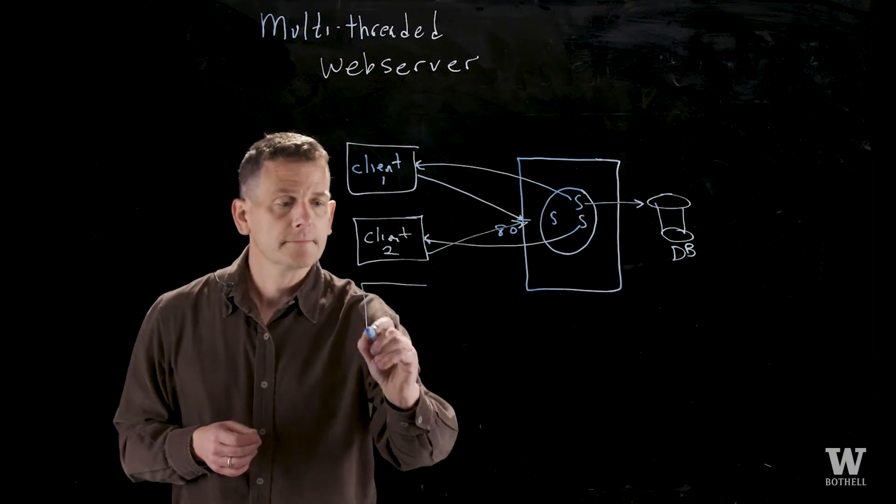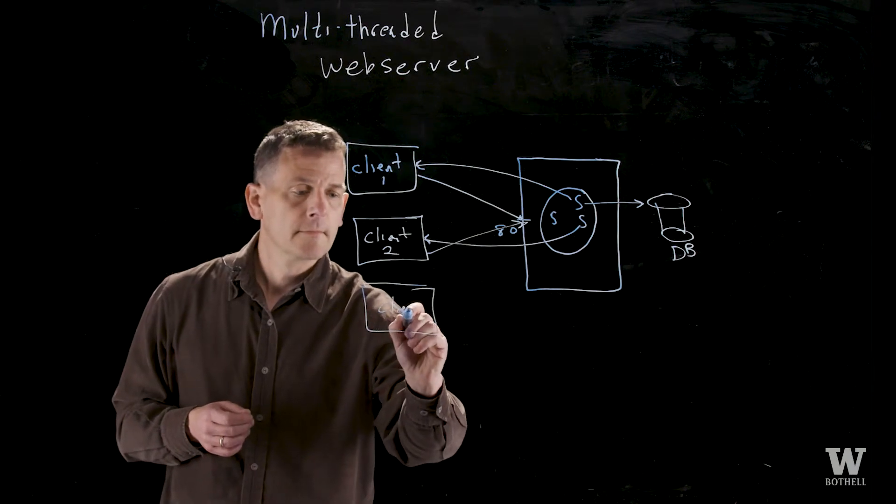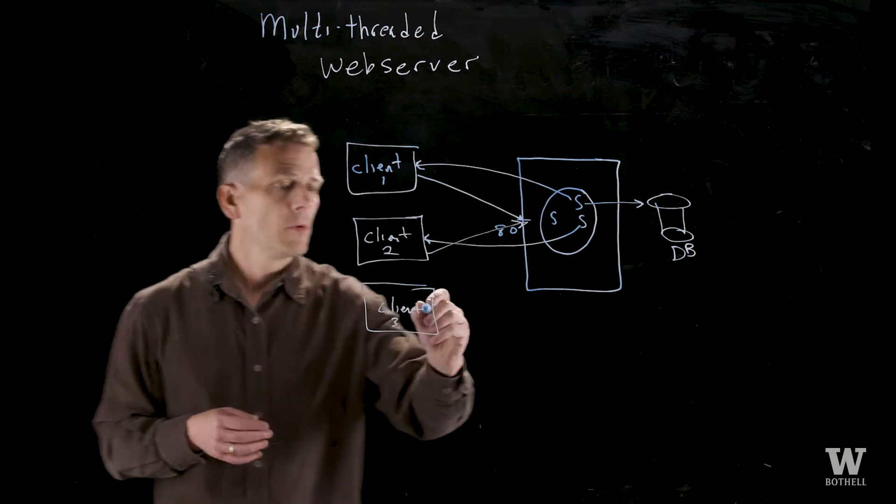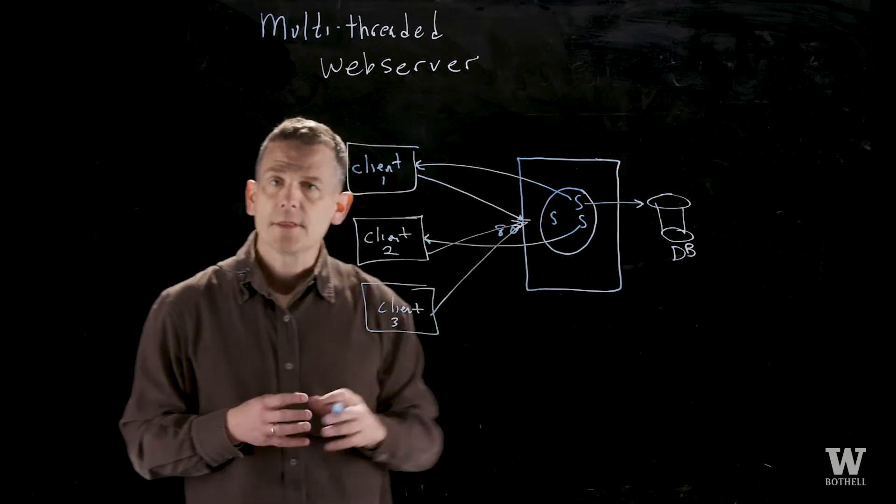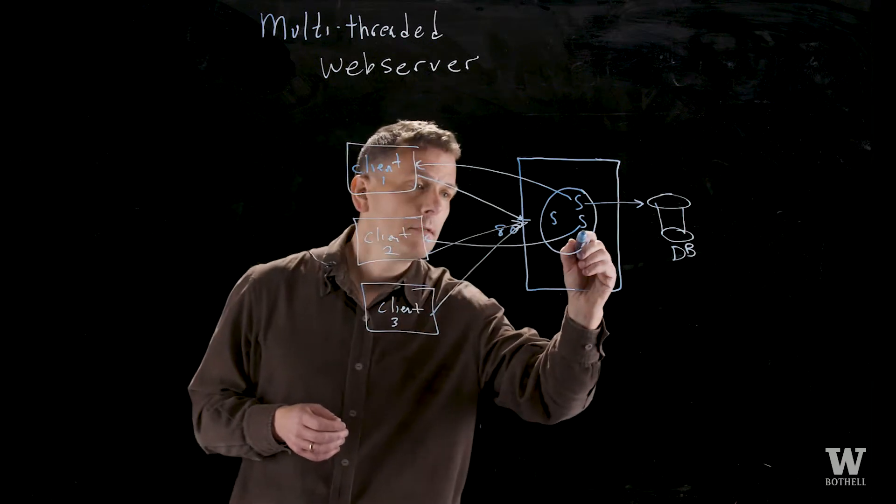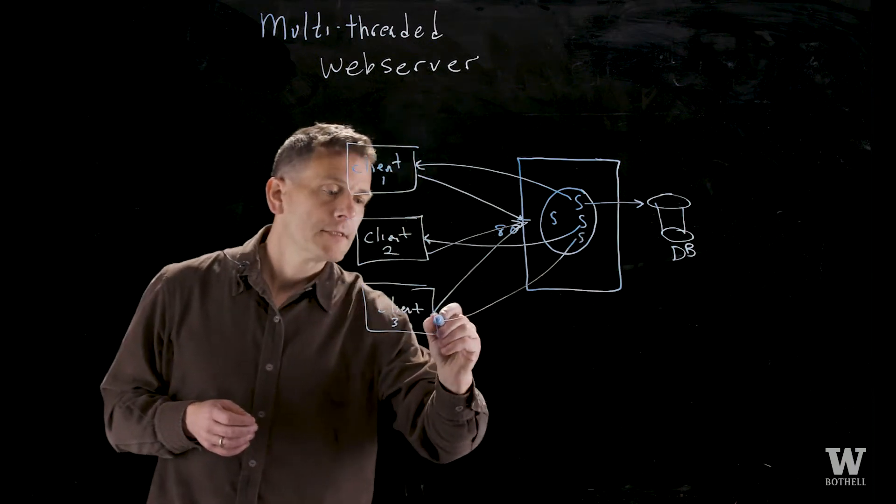Let's say a third client comes in. It goes to the same web server, goes to the same website, port 80. Again, the dispatch thread sees the work, hands it back to a working thread, and that has the connection.